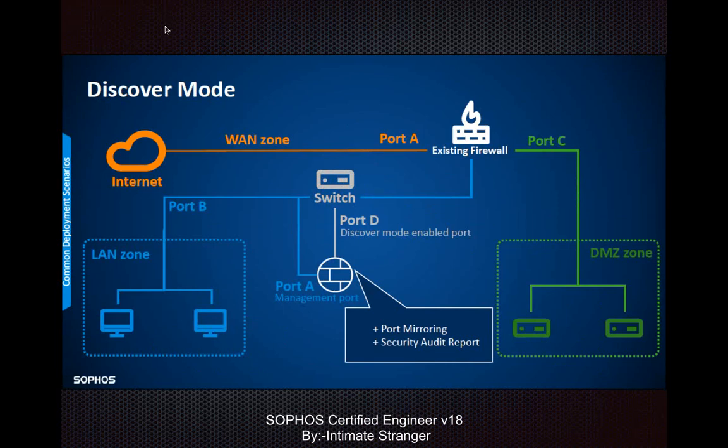The last deployment scenario is Discover Mode. Discover Mode is not a protection implementation - it's used to show the capability of the Sophos firewall to a customer, like a proof of concept. The Sophos firewall is connected directly to the core switch just behind your firewall, and a port is mirrored so that all traffic from the switch is copied to the Sophos firewall. All traffic can be monitored but no action is taken. After monitoring, you can generate a report and hand it to your customer showing all problems in the network, what traffic is going through, and what improvements should be made.